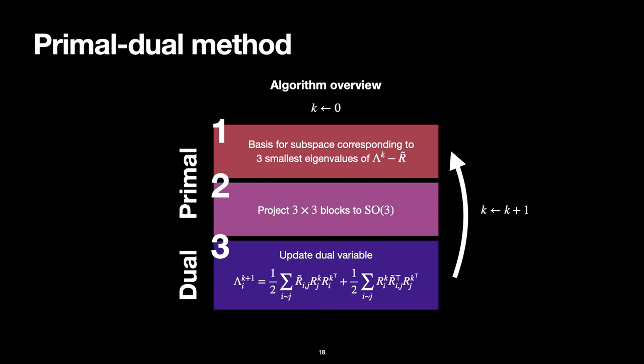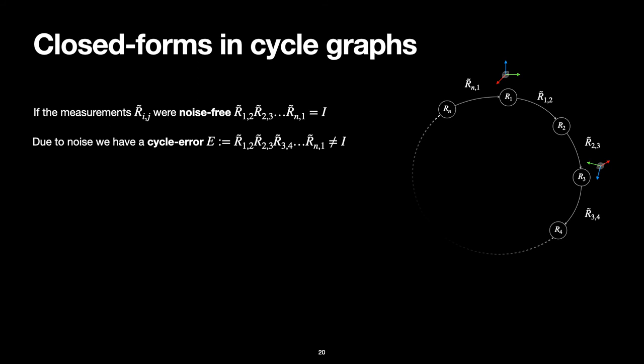We can now move on to closed forms in cycle graphs. Cycle graphs are of specific interest because we can assess the quality of measurements by integrating the pairwise rotations along the cycle. If we had noise-free measurements, the integration r12, r23, and so forth until we go back to the original pose would produce the identity. In reality, this does not happen. What we obtain is a cycle error, denoted by E, which is a rotation matrix slightly different from the identity.